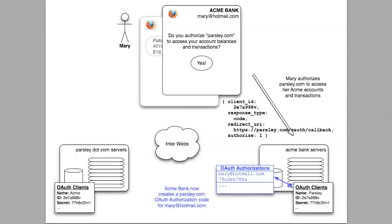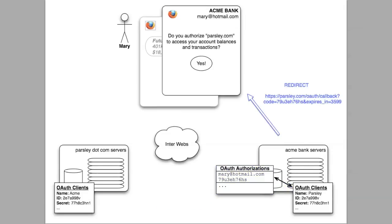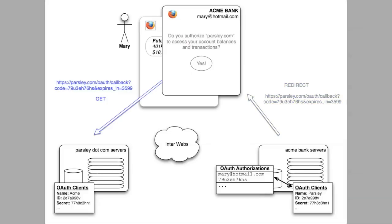At this point, Acme Bank does not immediately generate the access token. Instead, it creates an authorization code. What this code represents is that Mary has authorized Parsley to request her access token from Acme Bank — we're still a few steps away from actual token granting. Now we'll finally use that redirect URL. Acme Bank responds to Mary's Authorize button press with an HTTP redirect code. The redirect URL is built from the base redirect URI parameter and serves as a callback allowing Mary's browser to pass the newly granted authorization code back over to Parsley.com.